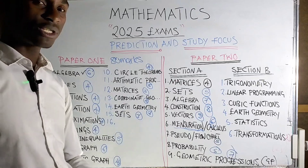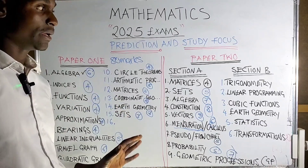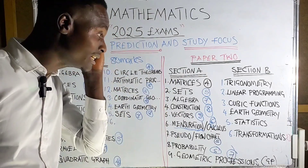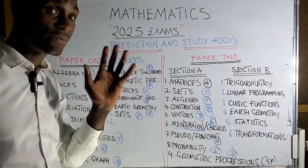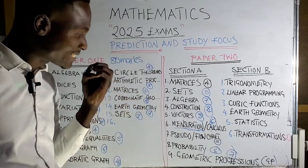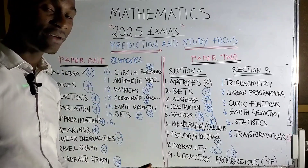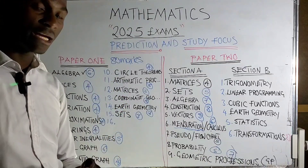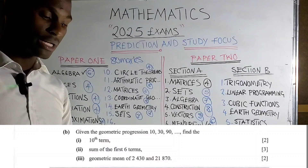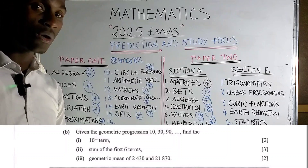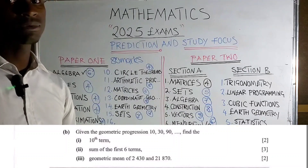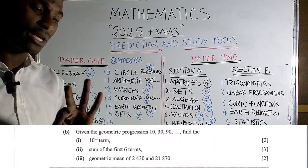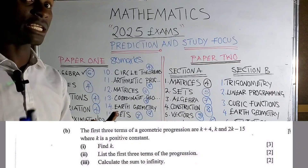Geometric progression is usually seven marks. Remember section A is compulsory so you need to study these topics in the remaining few days. Geometric progression comes in three ways. First: you may be given the first three terms — the easiest scenario. You may be asked to calculate the nth term, the common ratio, sum of GP, sum to infinity, or the geometric mean.